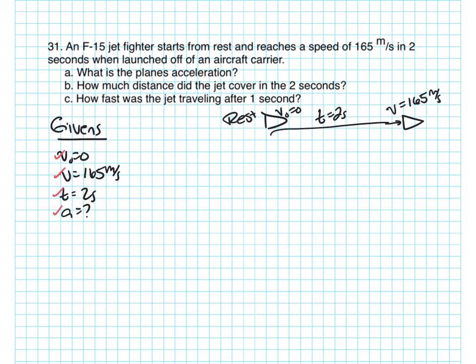And the one that we have for that is a relationship that says the final velocity is equal to the initial velocity plus the change in velocity. So that's V equals V-naught plus AT.